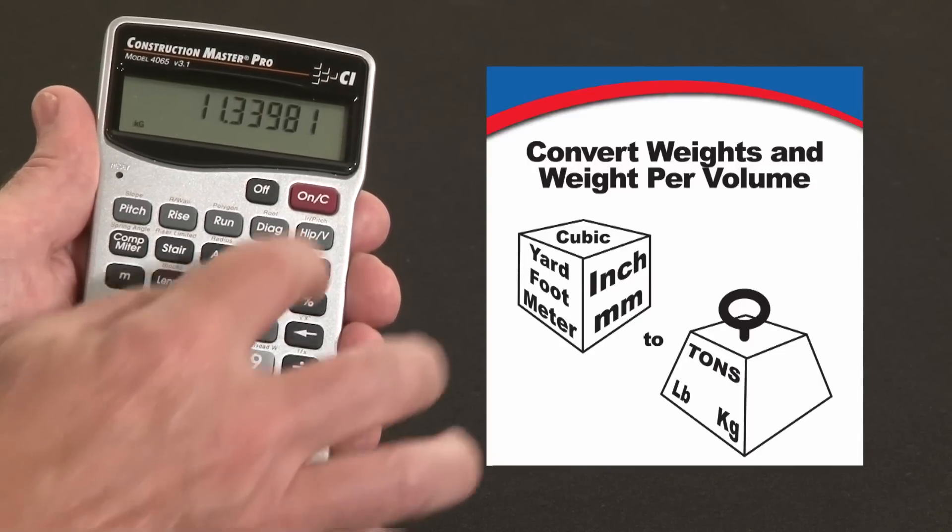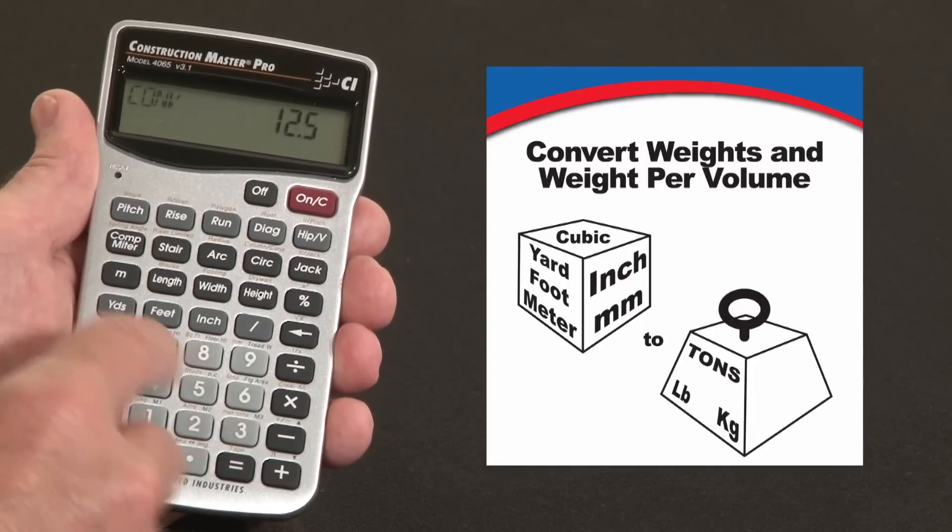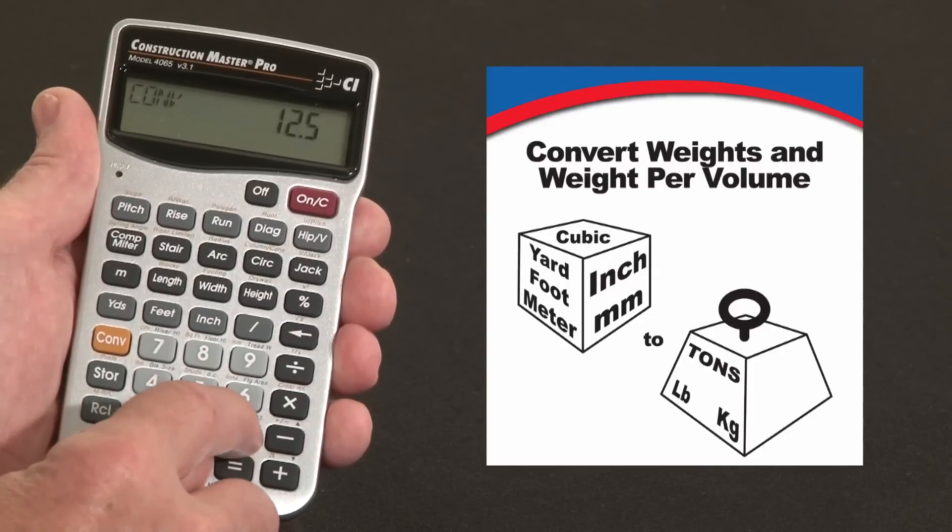You can enter directly metric tons. For instance, say I've got 12.5 metric tons over the 3, convert 3, it says metric tons.